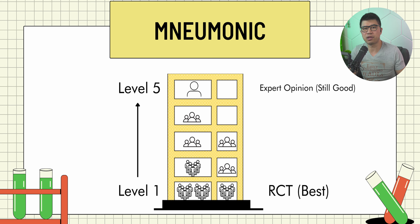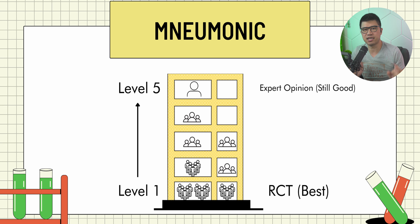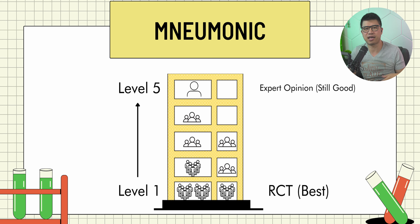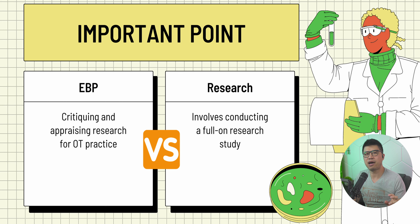To remember that level 1 is the highest level of evidence, imagine being in a library conducting research. On the ground floor — level 1 — is probably where you get the most foot traffic and visitors, so it's where the most important, best evidence is. But no one really goes all the way up to level 4, where the books gather dust — that's far less used in the scientific community.